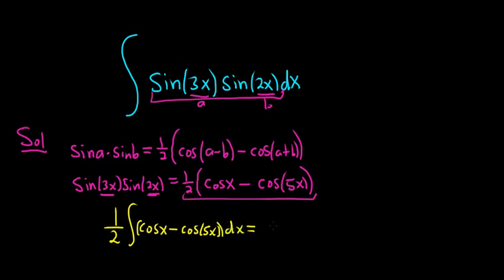We can break this up into two separate integrals. This is 1 half times the integral of cosine x dx minus 1 half times the integral of cosine 5x dx.